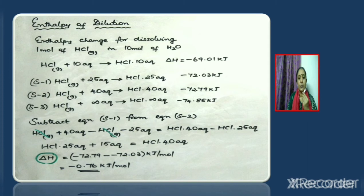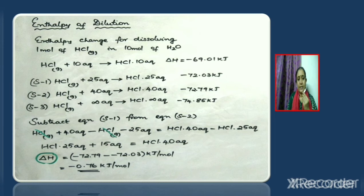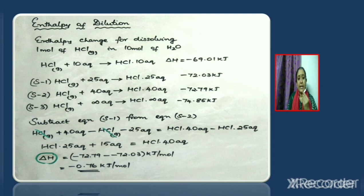Subtracting equation S-1 from equation S-2: HCl(g) + 40aq − HCl(g) − 25aq = HCl·40aq − HCl·25aq. The HCl(g) terms cancel. 40aq − 25aq gives 15aq. Taking HCl·25aq to the left-hand side gives: HCl·25aq + 15aq → HCl·40aq. The ΔH is calculated as −74.85 − (−72.03) which equals −0.76 kJ/mol, but recorded as −72.79 − (−72.03).